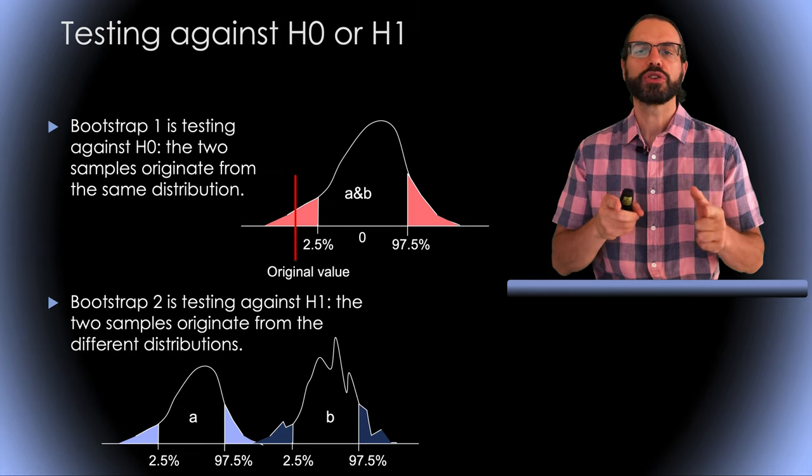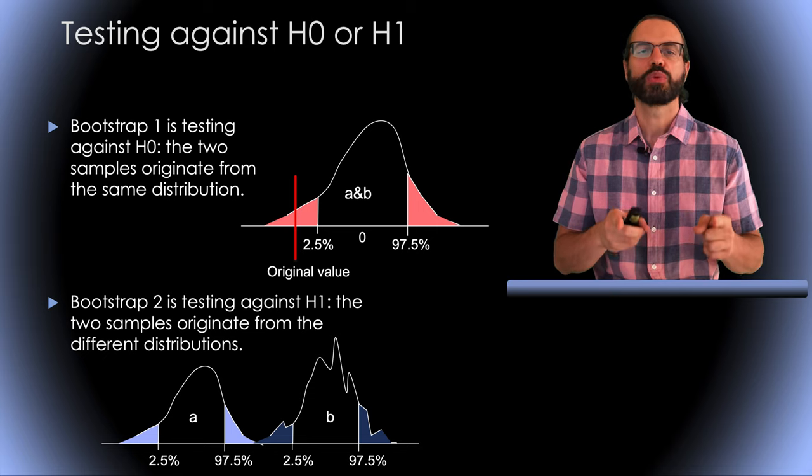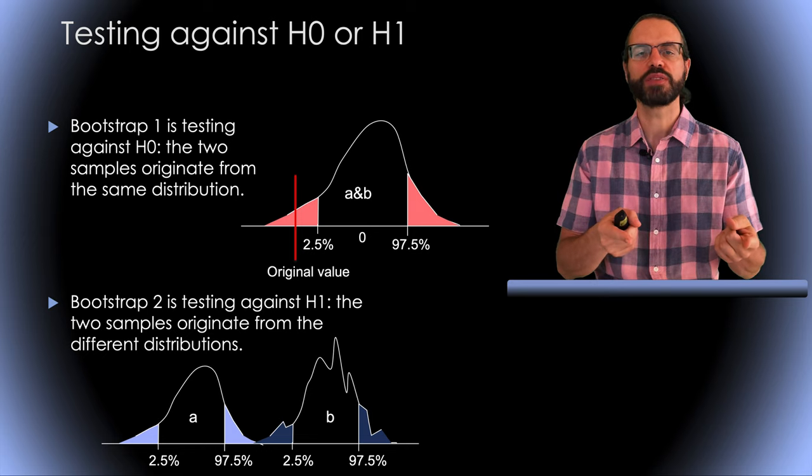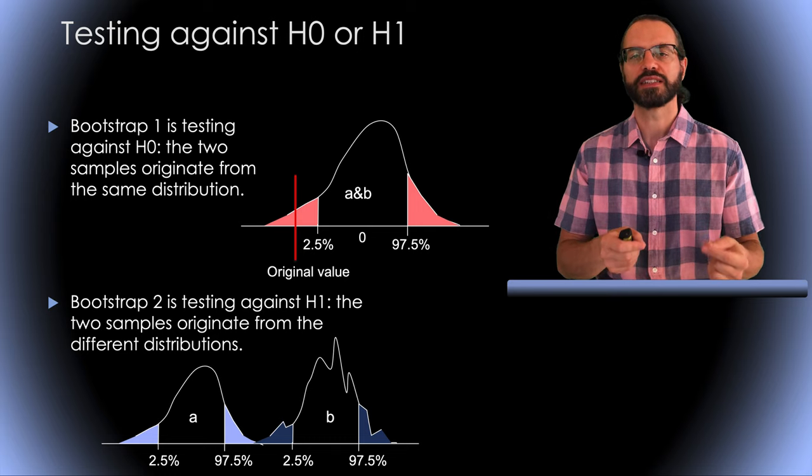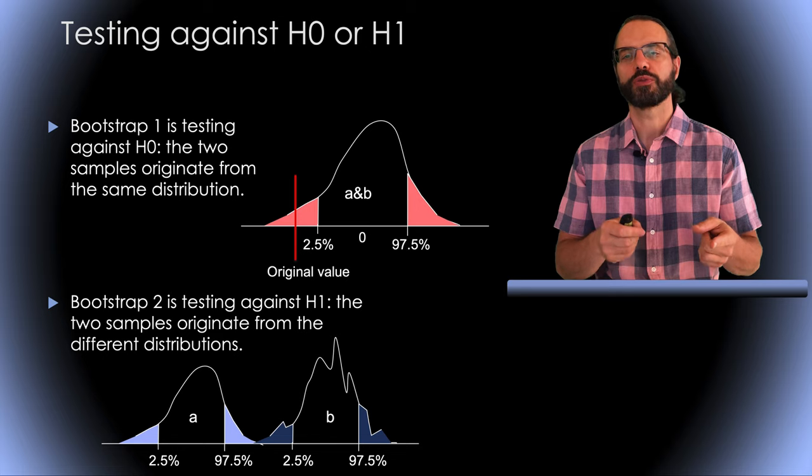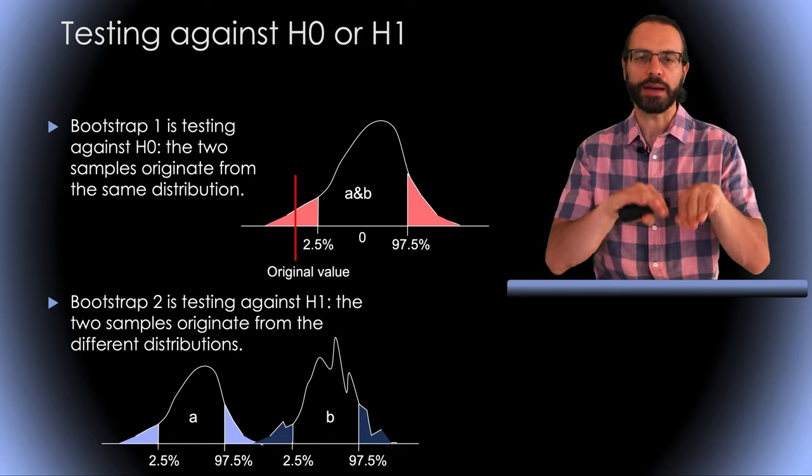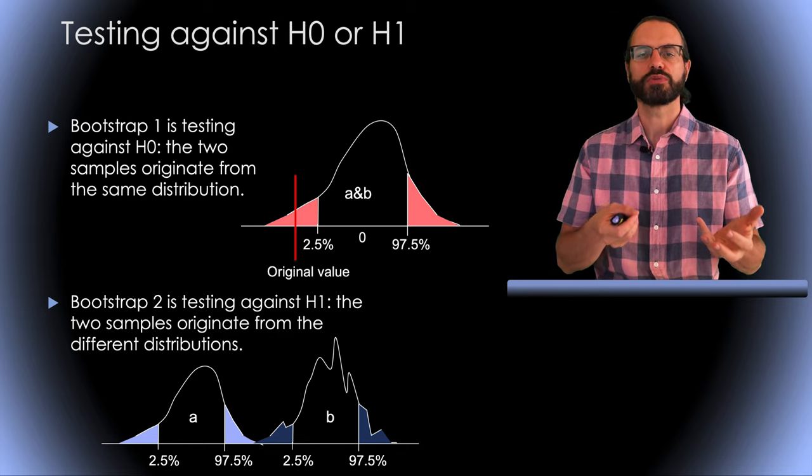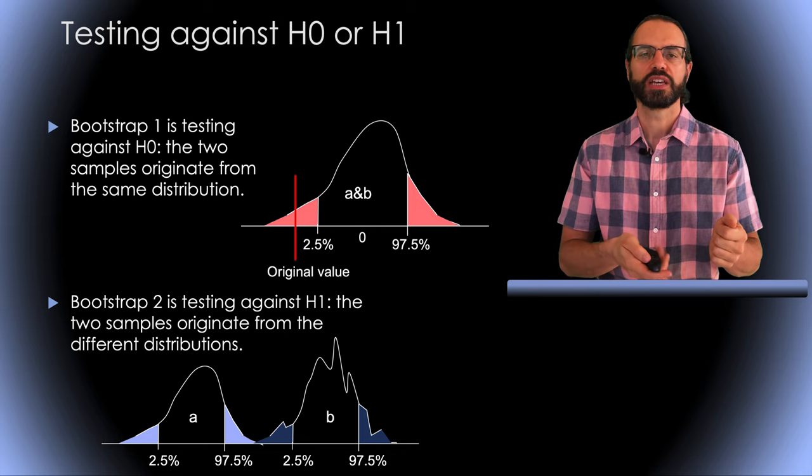Note that we also have the options of testing for H1 instead of H0. When testing for H0 in the null hypothesis, we build a null distribution assuming there is no difference between A and B. When testing for H1, the alternate hypothesis, we build a distribution for A and a separate distribution for B. We can calculate the p-value based on the overlap between the two distributions. Both approaches are complementary and return similar results. In one case you reject H0 and in the other one you accept H1.